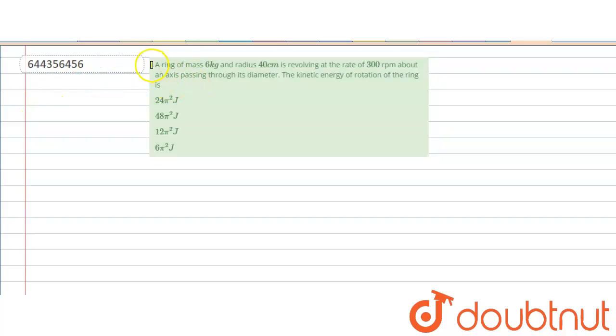Question is, a ring of mass 6 kg and radius 40 cm is revolving at the rate of 300 rotation per minute about an axis passing through its diameter. The kinetic energy of rotation of the ring is what? Let's find out.